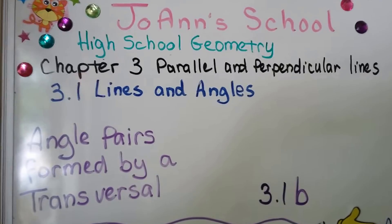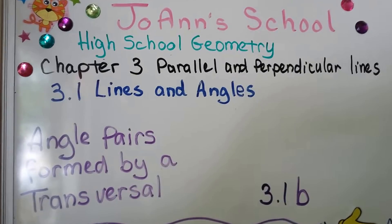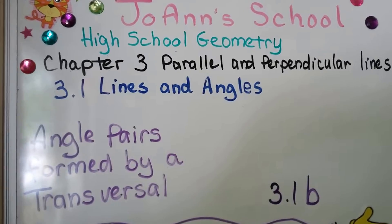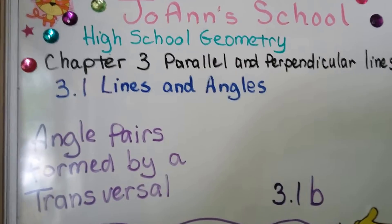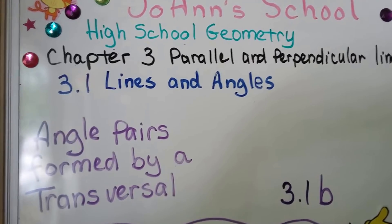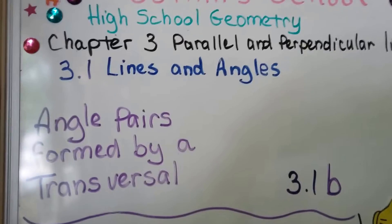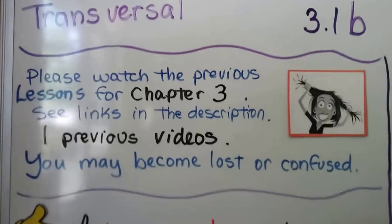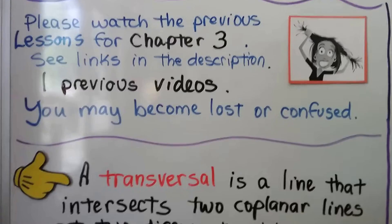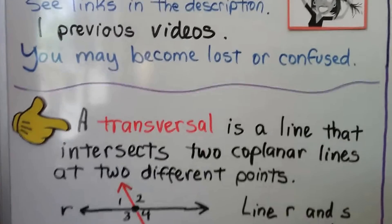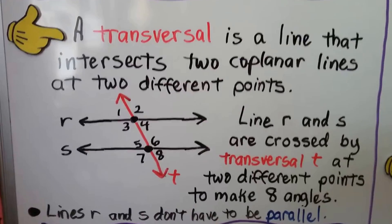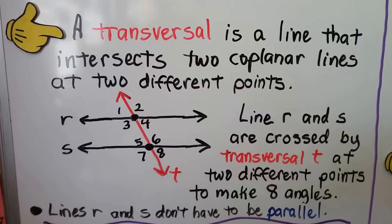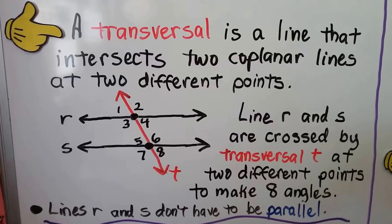We're still in Lesson 3.1 about lines and angles, and this is 3.1b, the second video. We're going to talk about angle pairs formed by a transversal. 3.1a can be found in the description in the Geometry Playlist link — if you haven't seen that, I don't want you to get confused. The little yellow hand means you should put this in your notes.